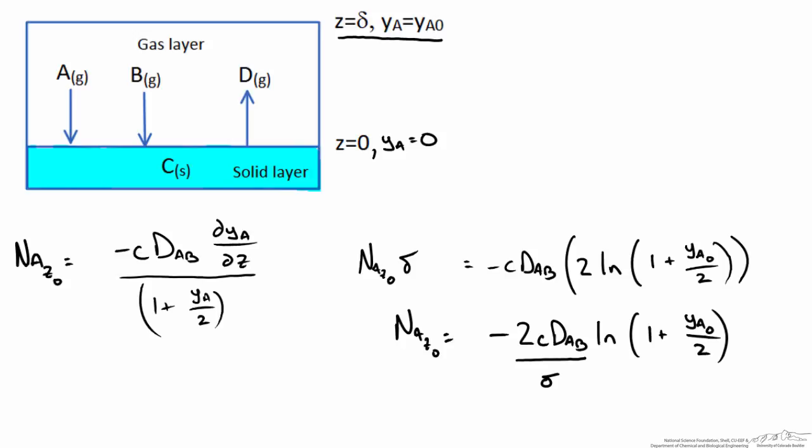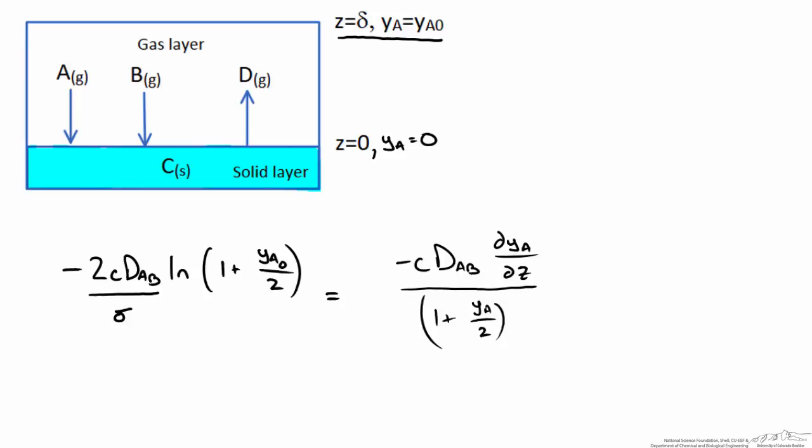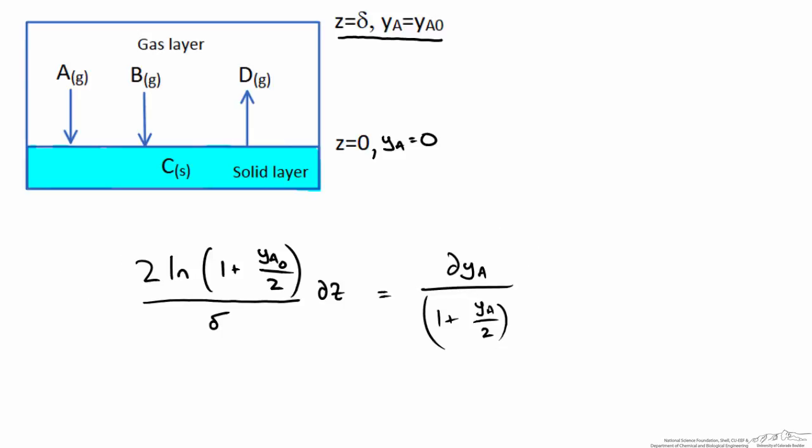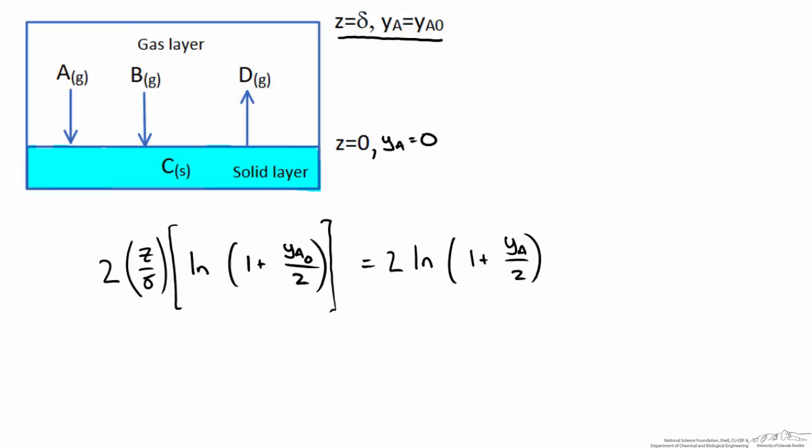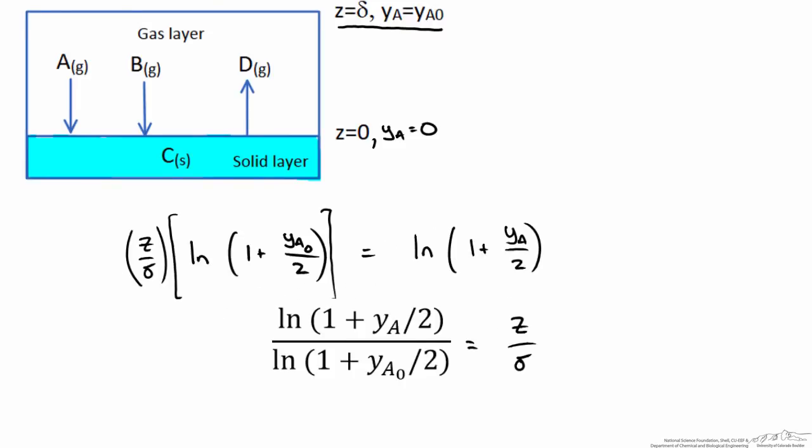Lastly we can put this back into our equation to solve for y as a function of z. If we set these equal, simplify and rearrange terms you should get the following. However this time we are evaluating from 0 to z and therefore 0 to yA. Solving these integrals and simplifying we get the following relationship where we can figure out the concentration or mole fraction yA as a function of z.